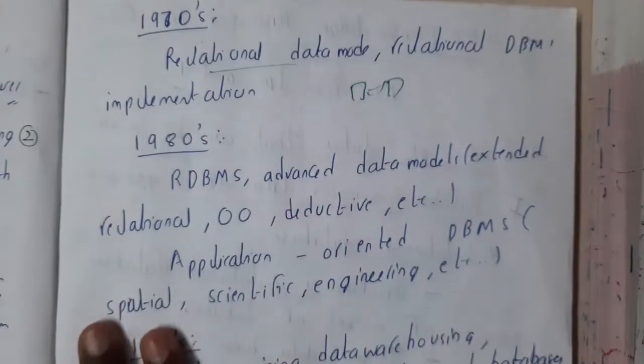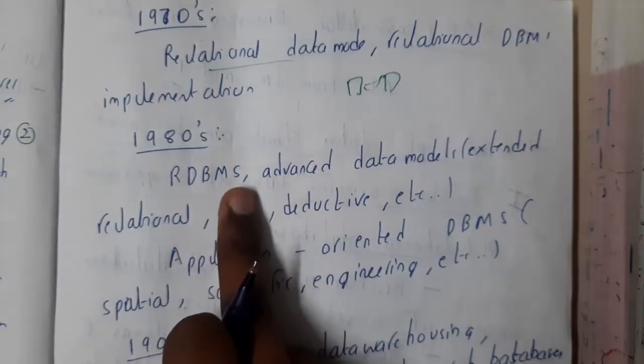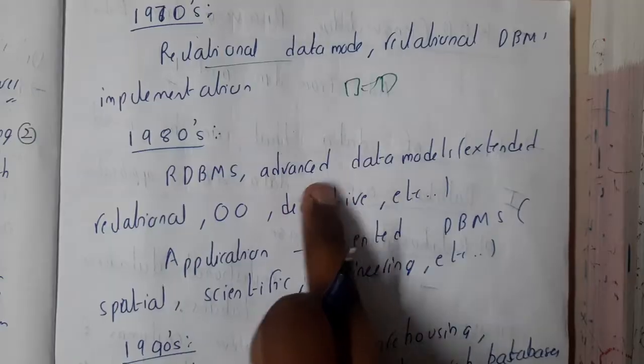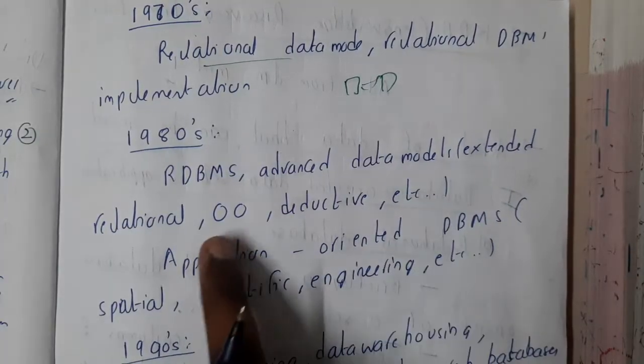In 1980s they used RDBMS along with advanced data models like object-oriented, all those things came into play.